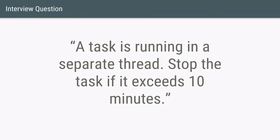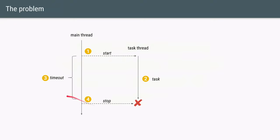Here's an interesting Java interview question. There's a task running in a separate thread and your job is to stop the task if it exceeds 10 minutes. So basically we have a main thread that's going to start another thread which will actually run the task, and then after a certain timeout — in this case 10 minutes — you want to be able to stop that particular task.